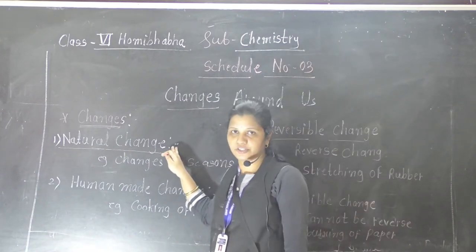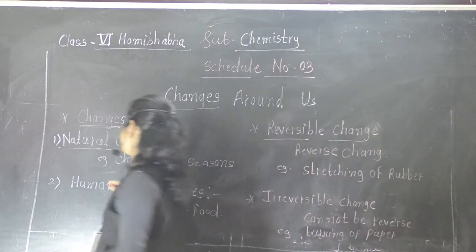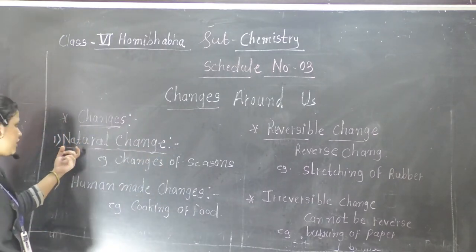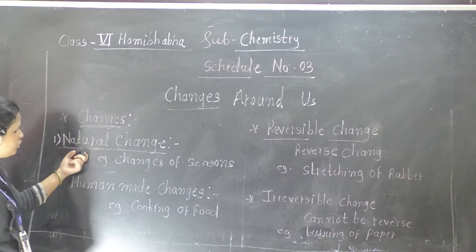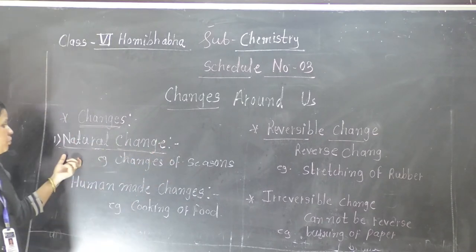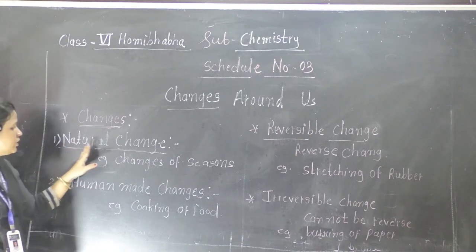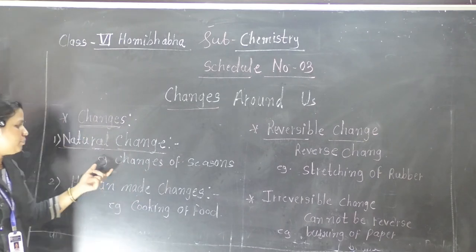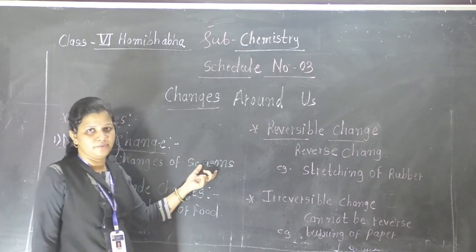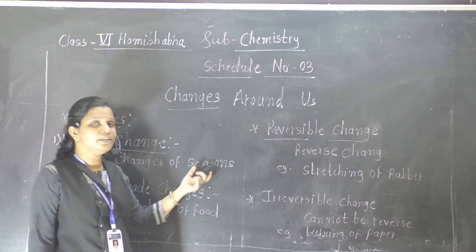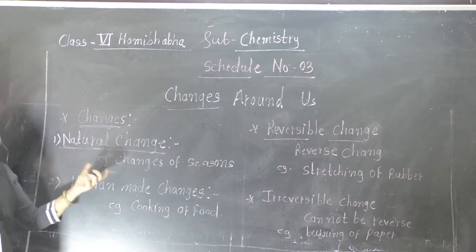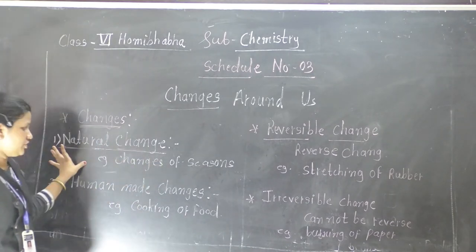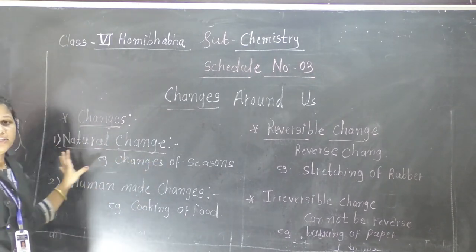First, let's look at natural changes. Natural changes means those changes which occur naturally. For example, the change of seasons is a natural change — we don't always know the exact time period, but it occurs naturally.